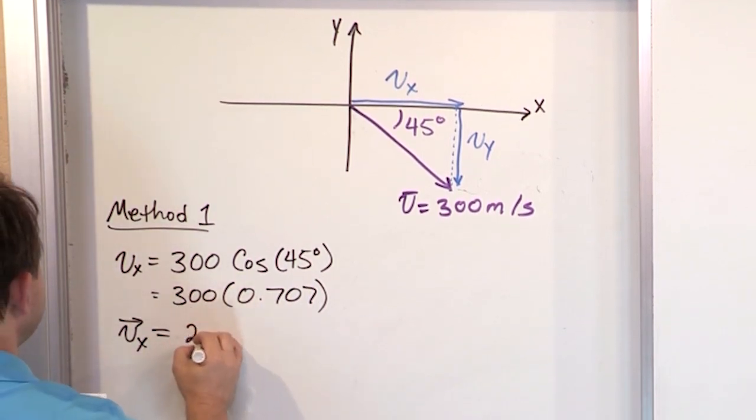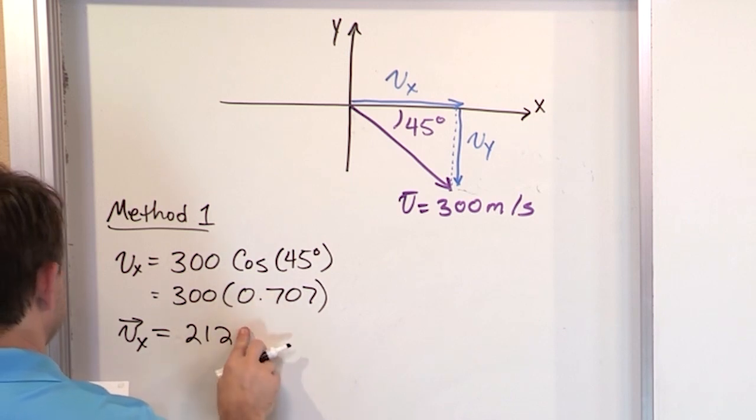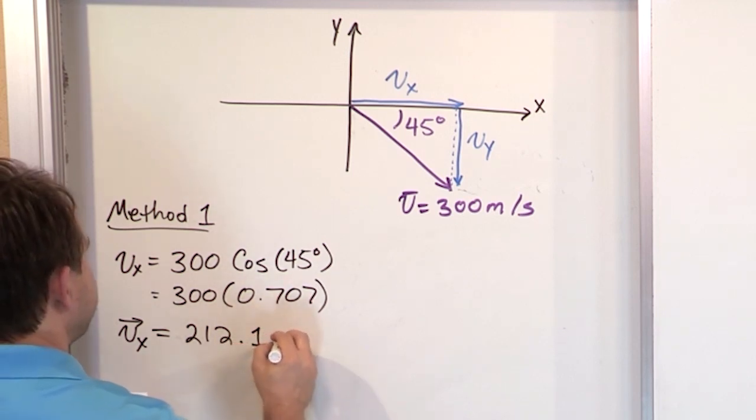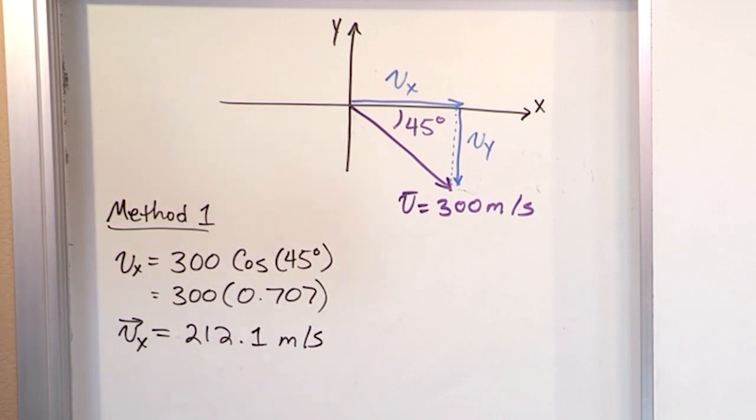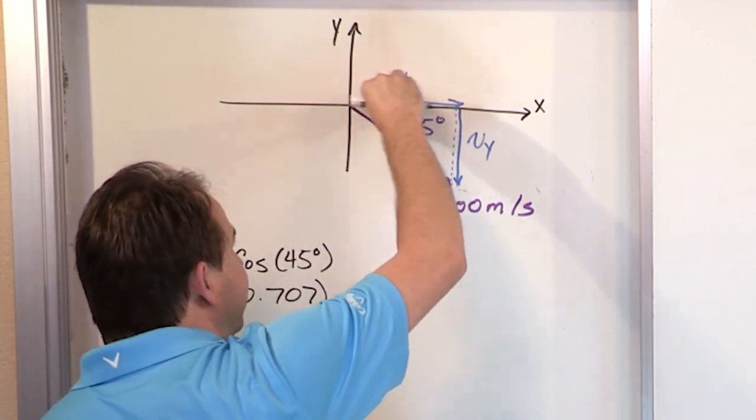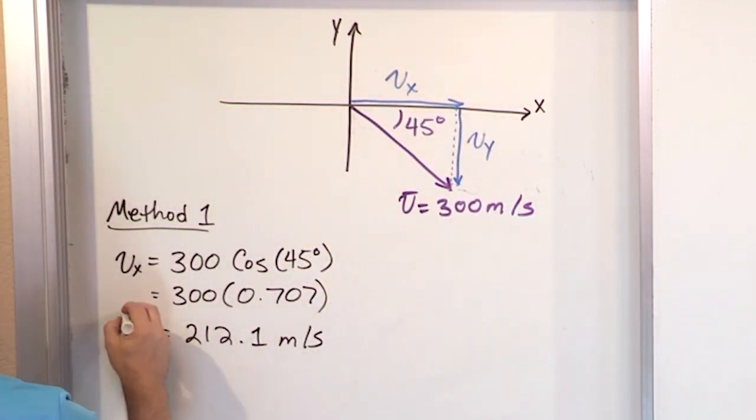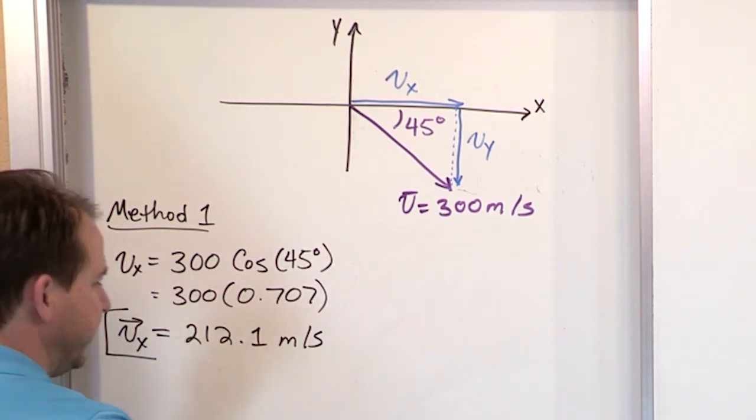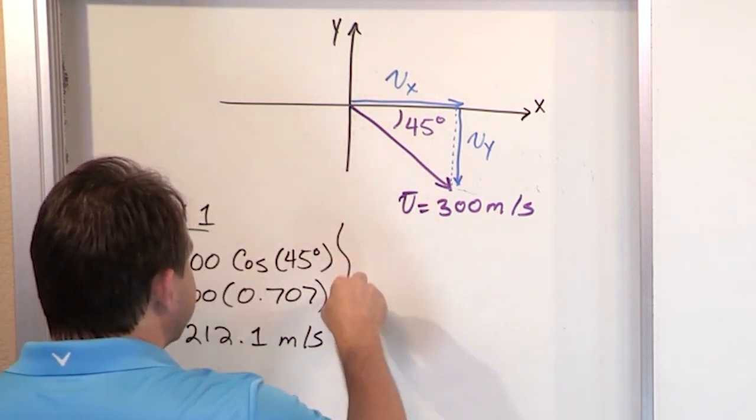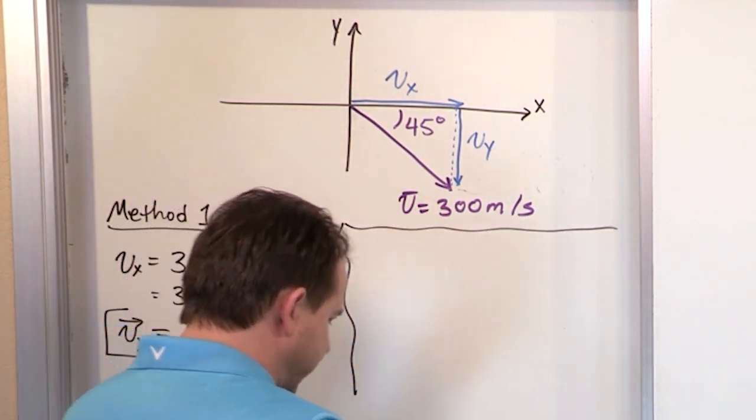So then the vx component vector, you multiply these guys together, you get 212.1 meters per second. And then you have to ask yourself, is this the correct sign for vx? Well, it's a positive number. I expect vx to be positive, so I think this is correct. So I'm just going to circle it as is. And that's correct. That's the right thing. That's the right thing to do.